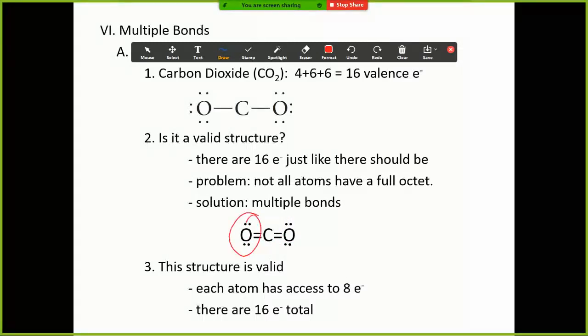And now this oxygen has 2, 4, 6, and 8, so it's good. This oxygen has 2, 4, 6, and 8, so it's good. And this carbon has 2, 4, 6, and 8 electrons, so it is also good. That makes this a valid structure.